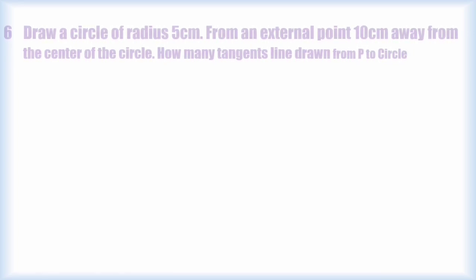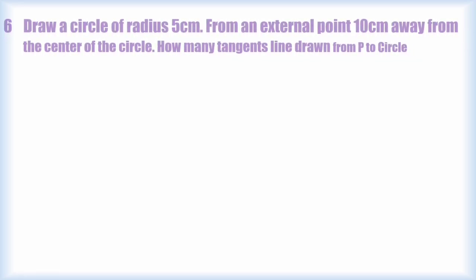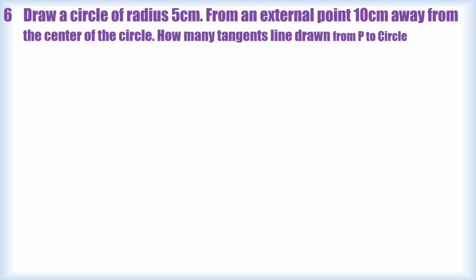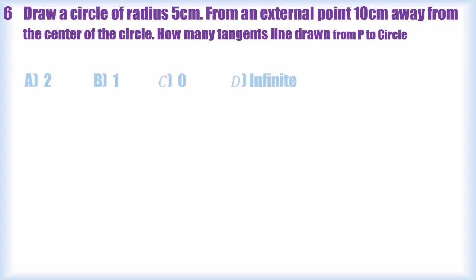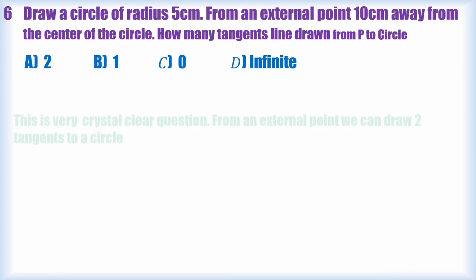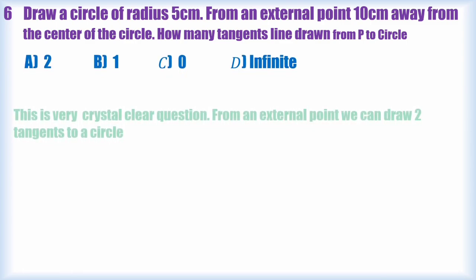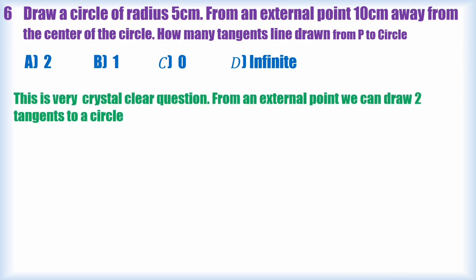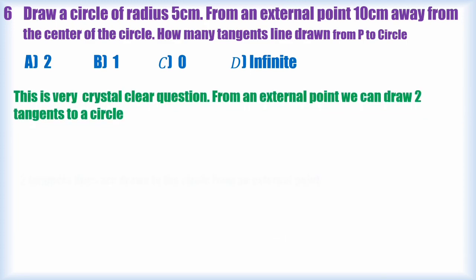The next question is 6th question. I draw a circle of radius 5 cm from an external point 10 cm away from the center of the circle. Then how many tangent lines are drawn from P to the circle? This is very crystal clear as we know from practical geometry. It's a very direct question. From an external point we can be able to draw two tangents to the circle.